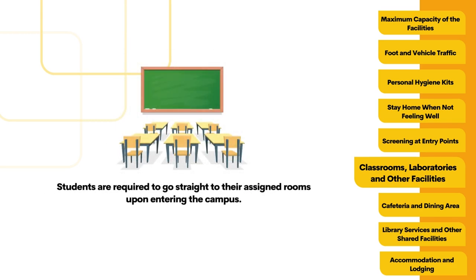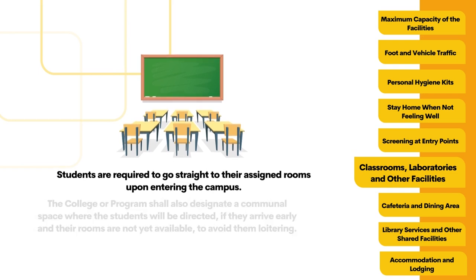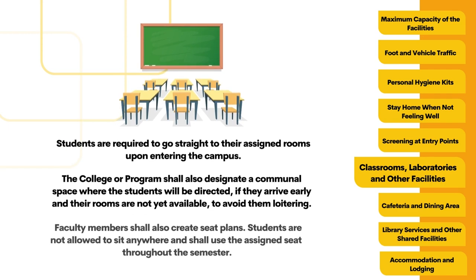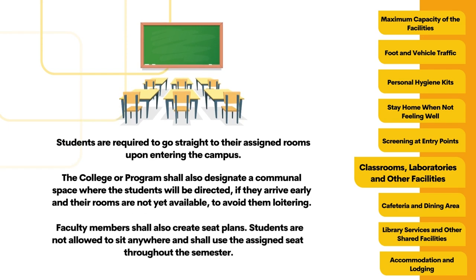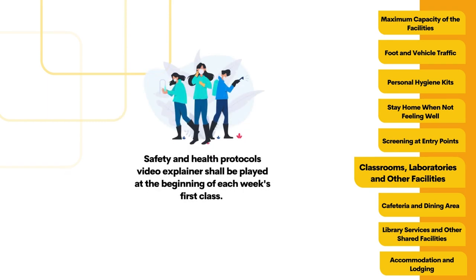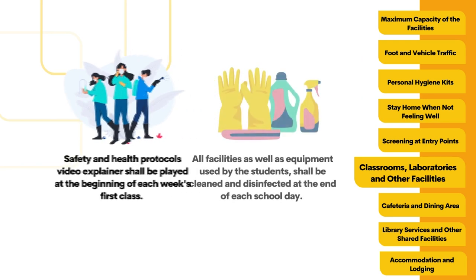Students are required to go straight to their assigned rooms upon entering the campus. The college or program shall also designate a communal space where students will be directed if they arrive early and their rooms are not yet available, to avoid loitering. Faculty members shall create seat plans indicating the assigned seats of students. Students shall not be allowed to sit anywhere else and shall use the assigned seat throughout the semester. The seat plan, depending on the room size, shall be forwarded by the college or department for approval of the CMC.